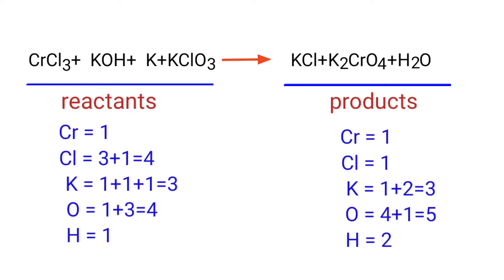The number of atoms are not balanced on both sides. To balance the chemical equation, we need to make use of coefficients. A coefficient is a number that we place in front of a chemical formula.